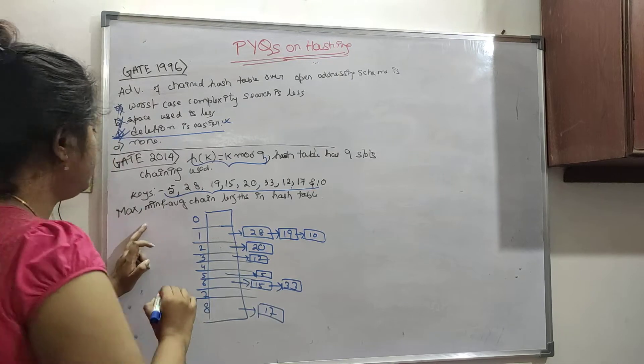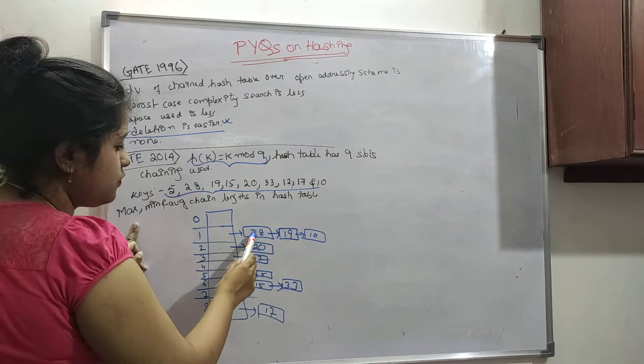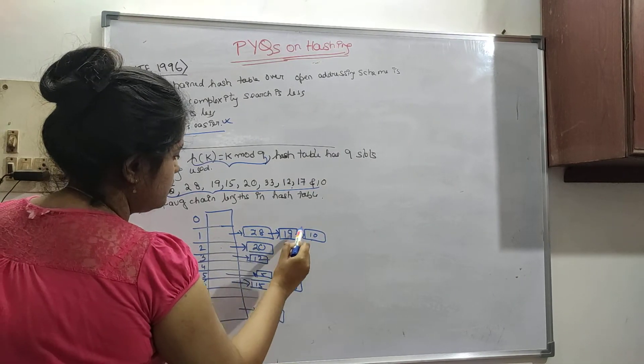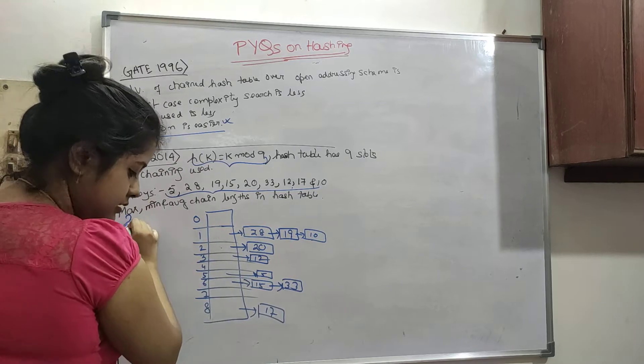They are asking maximum length. Maximum length is 1, 2, 3. 1, 2, 3. So maximum is 3.